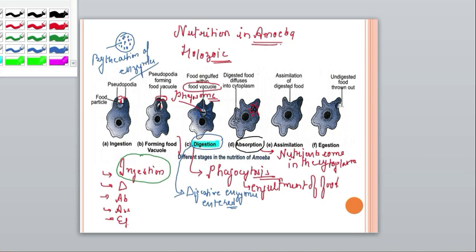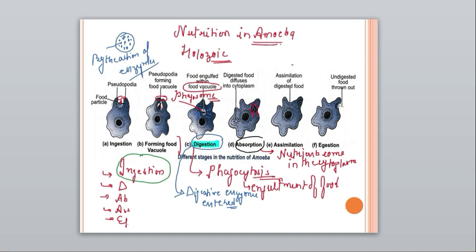Assimilation is the next step. The nutrients absorbed into the cytoplasm are used in the growth of the amoeba and in respiration. Respiration is the process in which food gets burned to release energy. So the food absorbed in the cytoplasm is utilized for growth and for energy extraction through respiration.